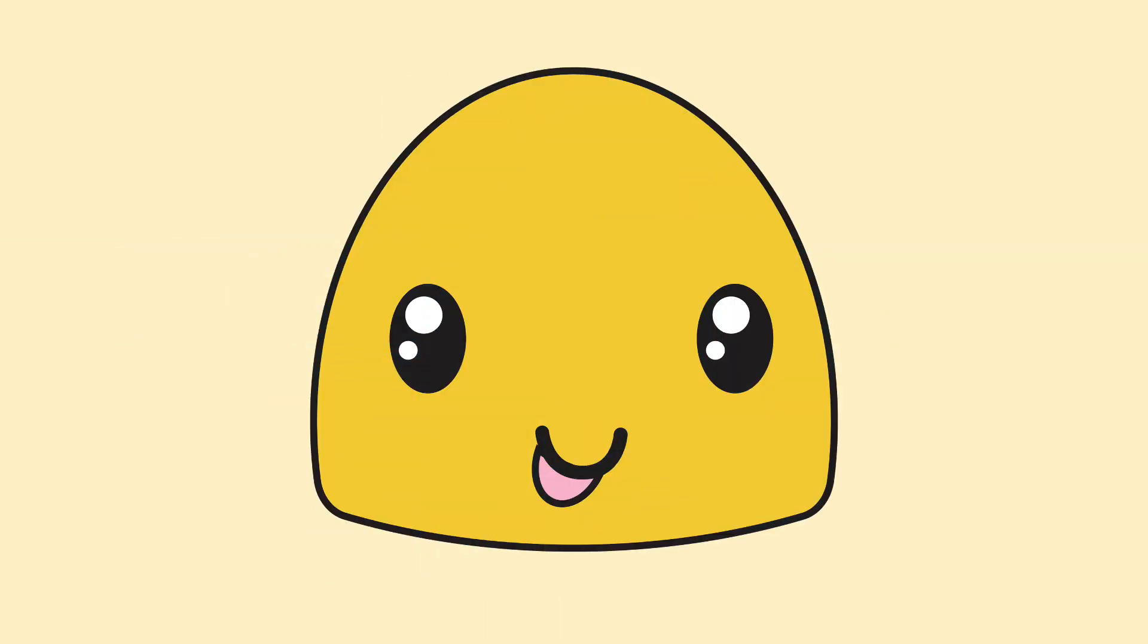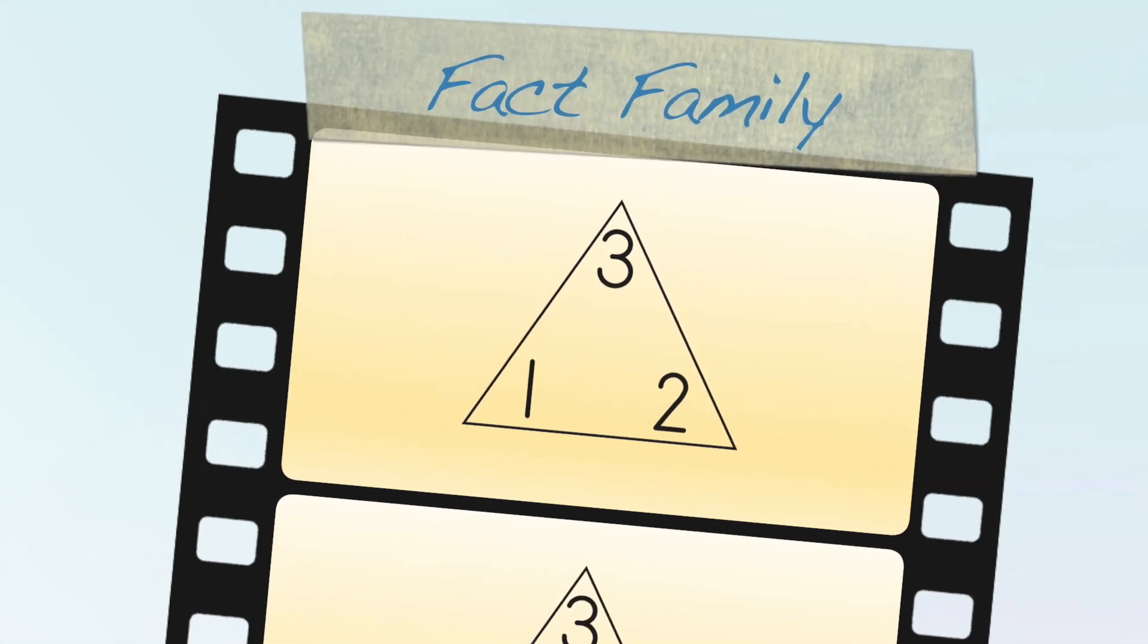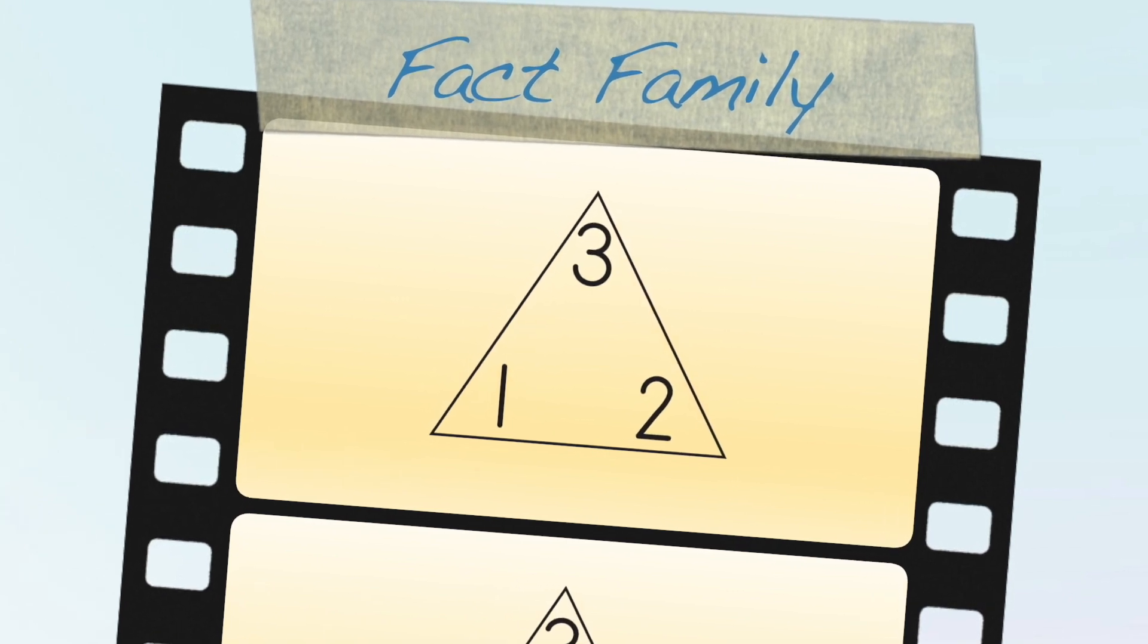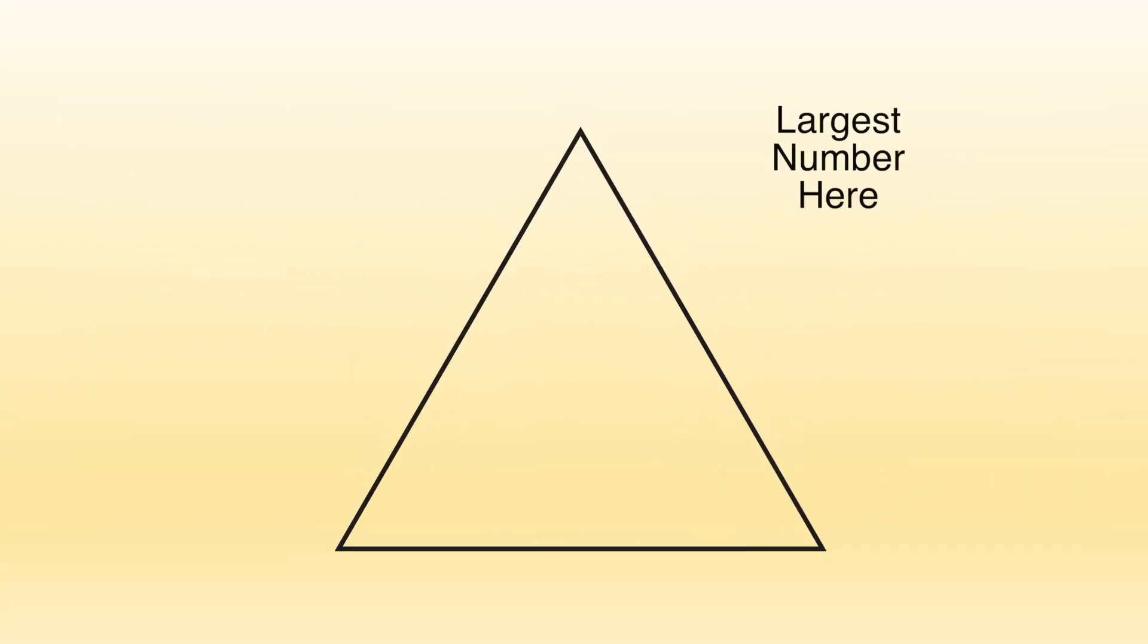Emily knows that a Fact Family triangle is a big help for listing math facts. A Fact Family is made up of three numbers that go together to make addition and subtraction facts. You put the largest number at the top of the triangle, and the other numbers go to the bottom.